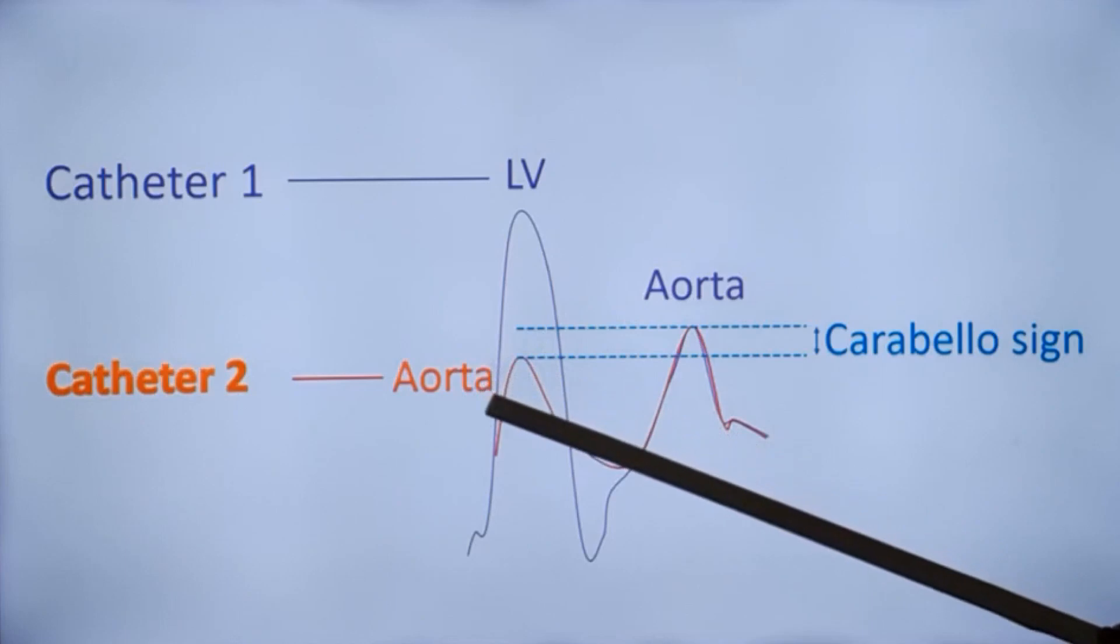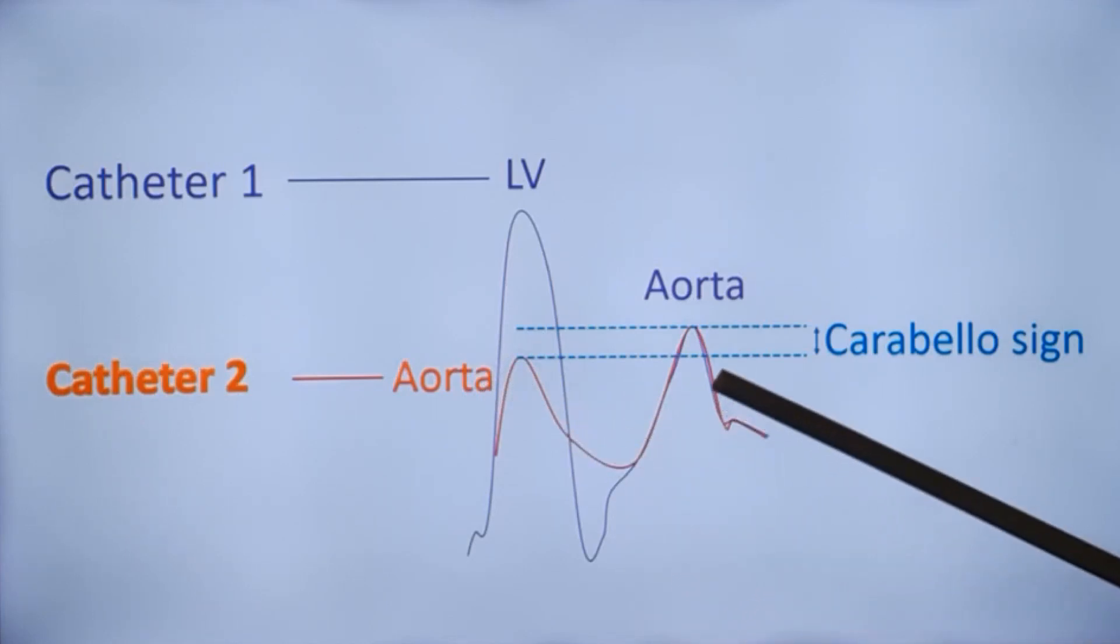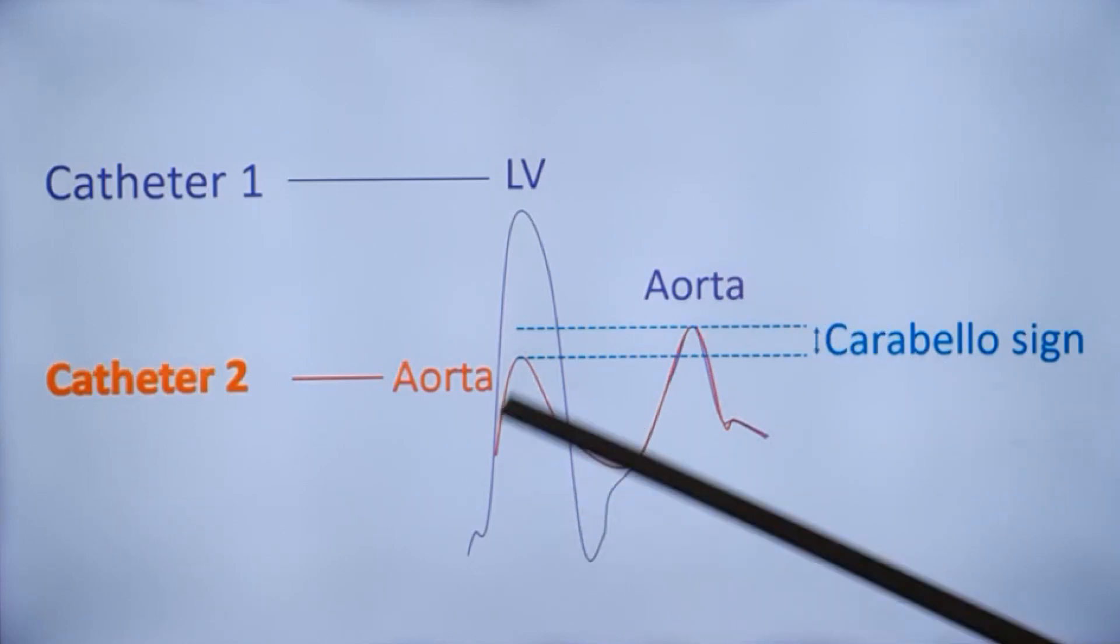That is, the aortic catheter or femoral artery catheter will demonstrate a rise in systolic pressure when the left ventricle catheter is pulled out from the left ventricle into the aorta.